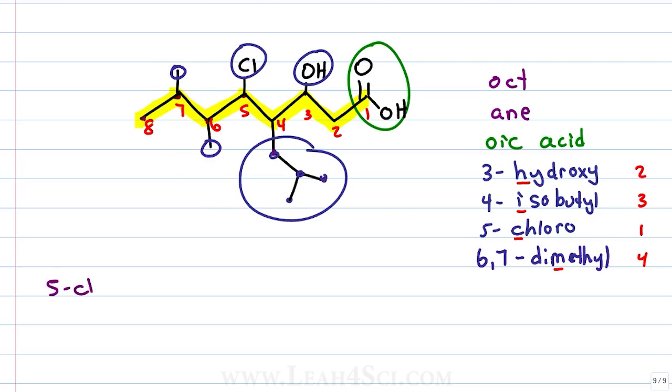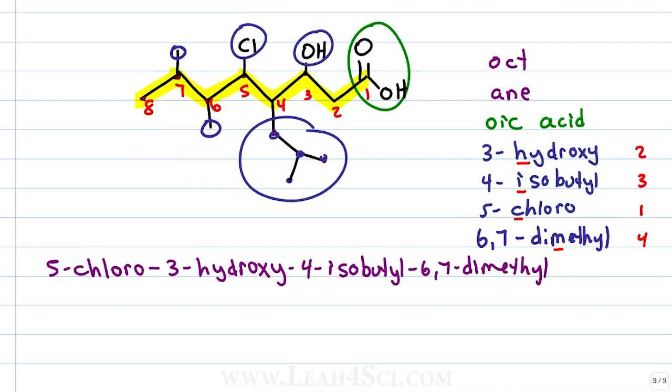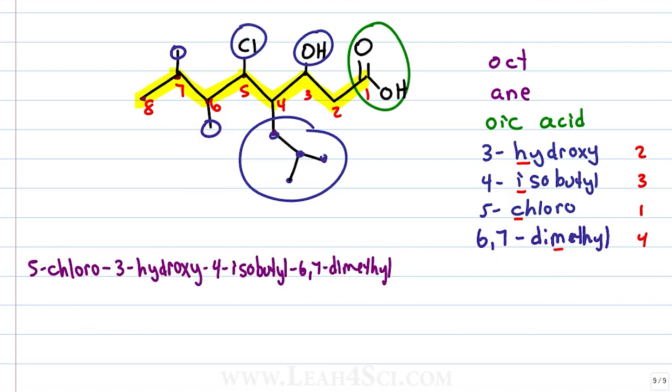That gives me 5-chloro-3-hydroxy-4-isobutyl-6 comma 7-dimethyl and we're running out of space but we still have some name to go so let's squish it together and then just like with the alcohol, if we have an ending with a vowel and oic acid starting with a vowel, we drop that E to give us octanoic acid where acid is a separate word. So our final name is 5-chloro-3-hydroxy-4-isobutyl-6,7-dimethyl octanoic acid. Phew, that's a mouthful.